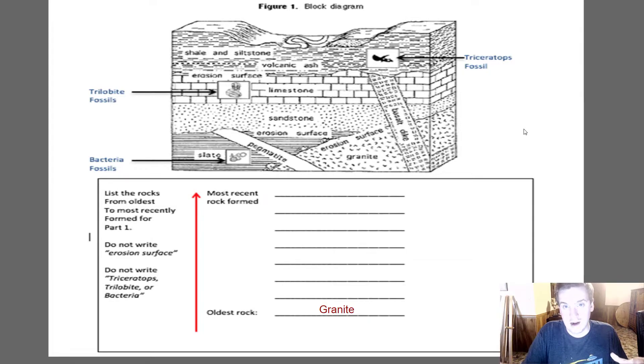Granite forms in really large zones. We call them plutons. It is possible to violate the law of original horizontality when it comes to igneous rock. So granite's an igneous rock. It doesn't have to be horizontal. Some people might argue that it's cutting across the slate. Not necessarily the case. The granite is the first one in this case because it's igneous and because you see chunks of it inside of the slate.